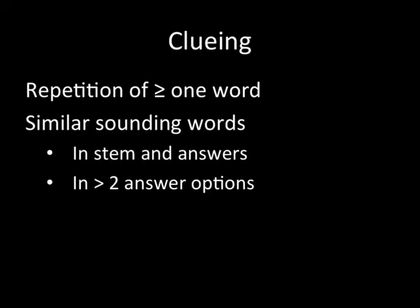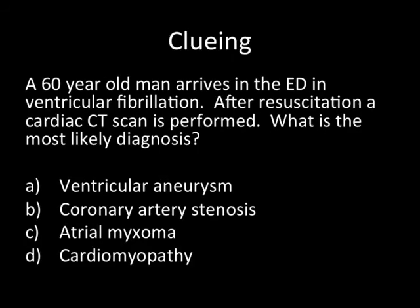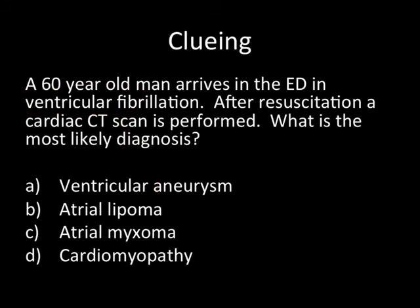There are subtle forms of cluing you may not be aware of, though you've likely used them subconsciously when taking exams — such as repeating one or more words either in the stem and the answers, or across more than two answer options, as I showed in the renal and liver masses example. For instance, a stem describes a 60-year-old man in ventricular fibrillation; if 'ventricular' then appears as one of the answer options, it clues you toward that answer. Similarly, if 'atrial' appears in two of the answers, that narrows it to atrial lipoma or atrial myxoma.